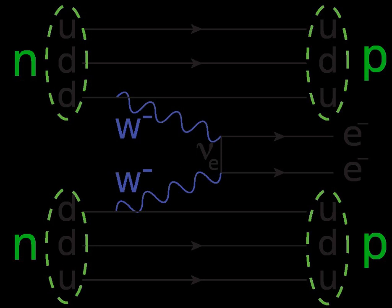For some nuclei, such as germanium-76, the isobar one atomic number higher has a smaller binding energy, preventing single beta decay. However, the isobar with atomic number two higher, selenium-76, has a larger binding energy, so double beta decay is allowed.